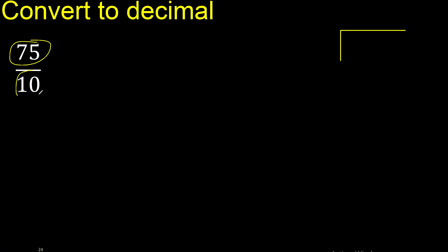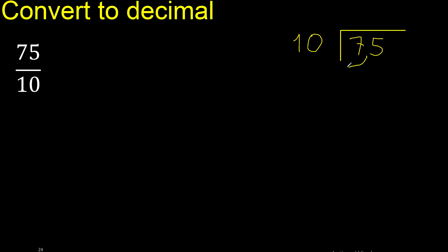75 divided by 10. 75 is not less, therefore, 10 multiplied by which number is nearest to 75 but not greater. Multiply by 8 is greater, therefore multiply by 7 is 70 — it is not greater.